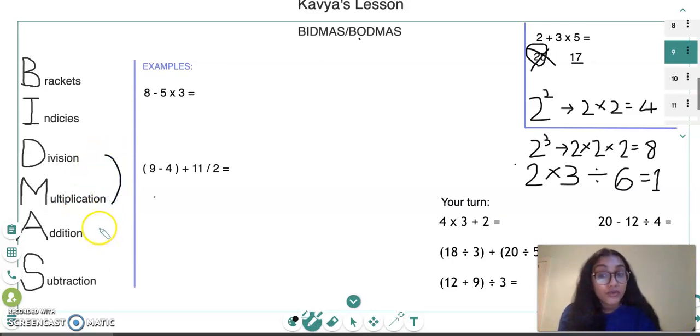So these two collectively come before addition and subtraction. Now I'm going to show you some examples. The first question here is 8 take away 5 times 3 equals. The two operations we have are a subtraction sign and a multiplication sign. What we do first is look at the BIDMAS, look at what each letter stands for, look at our operations—we have times and minus.